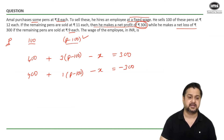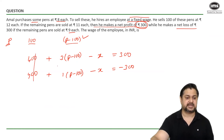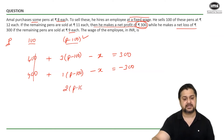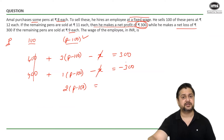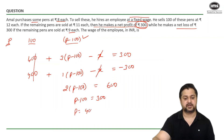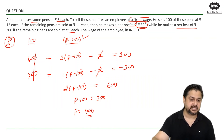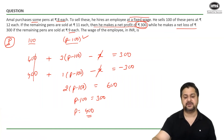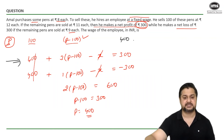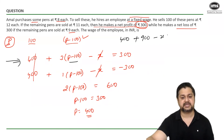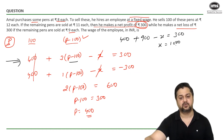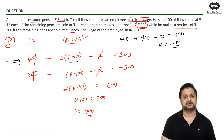We now have two equations and two unknowns. Subtracting the second equation from the first: the 400 cancels, 3(p − 100) − 1(p − 100) = 2(p − 100), and x cancels, giving 300 − (−300) = 600. So 2(p − 100) = 600, meaning p − 100 = 300, and therefore p = 400. Substituting back: 400 + 3(300) − x = 300 → 400 + 900 − x = 300 → x = 1000 rupees.